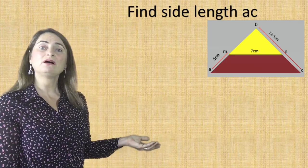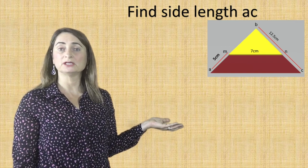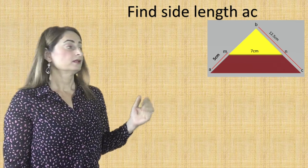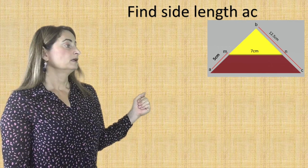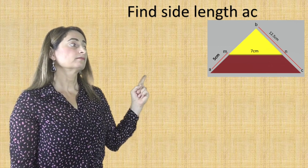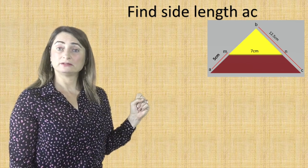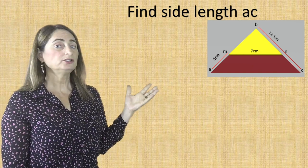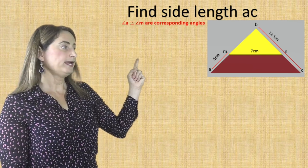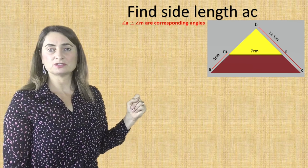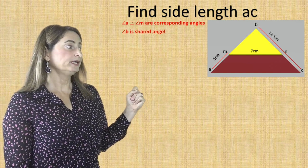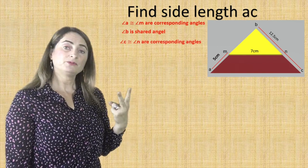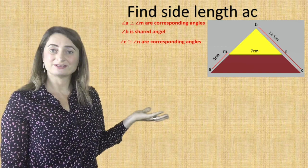Here's the last example of proving two triangles are similar and finding the side length. Look at the drawing — I'm trying to find side length AC. If you notice, AC and MN are parallel lines, and side BA is the transversal. Angle A is congruent to angle M because they are corresponding angles. Angle B is a shared angle — it's the same angle for both triangles, like a small triangle inside the big triangle. So I've proved two pairs of angles are congruent, therefore the two triangles are similar.